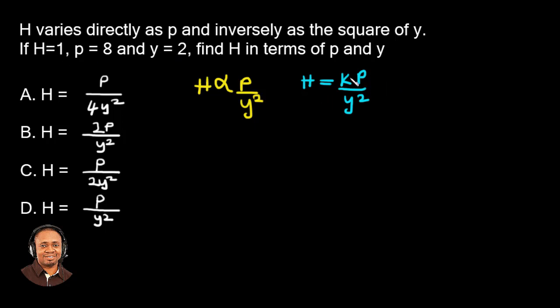So we're going to substitute that in here. If we substitute h, h we have 1. Then k, for p we have 8. Then for y, what do we have? 2. So we have 2 squared, which is 4.